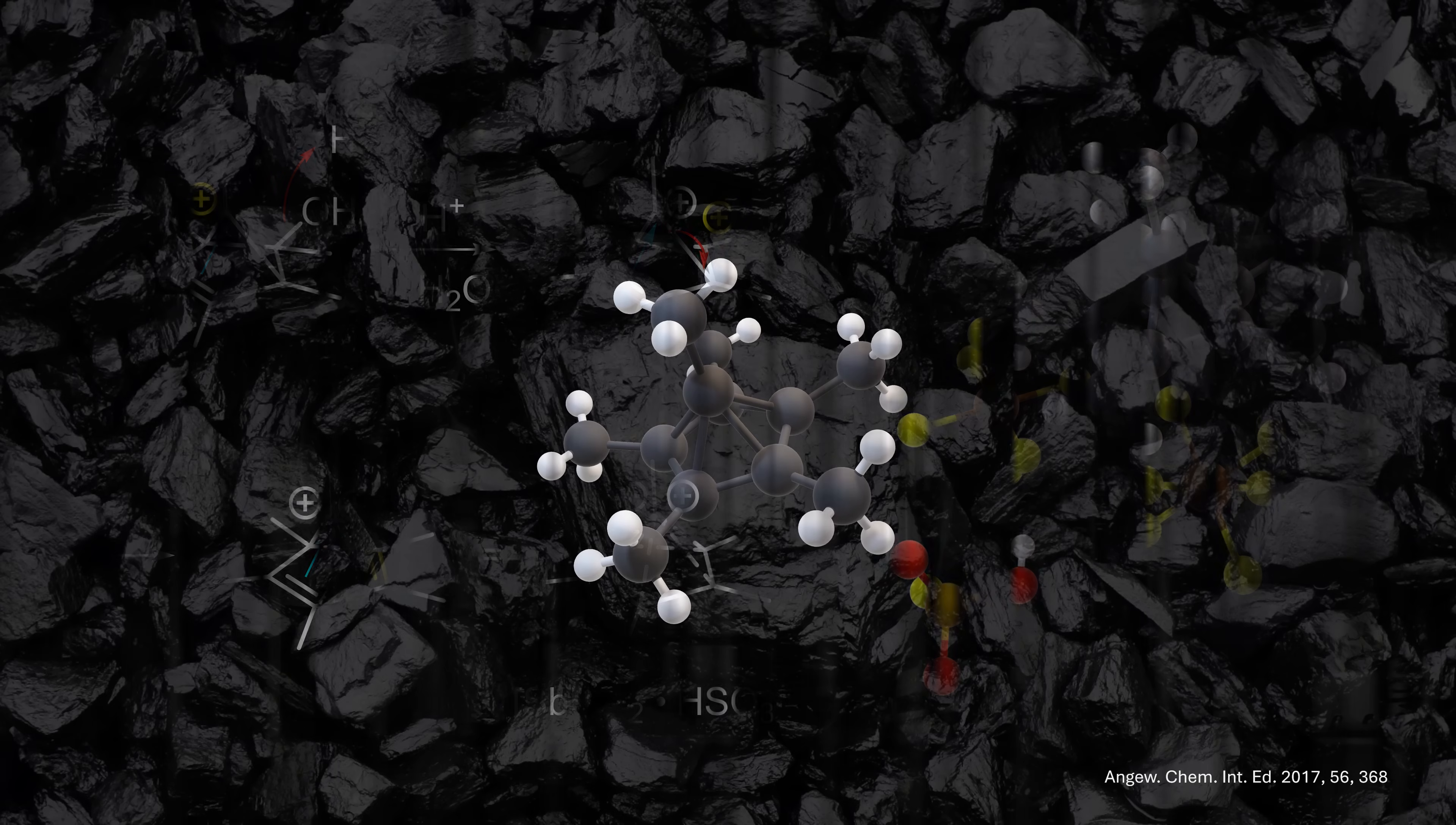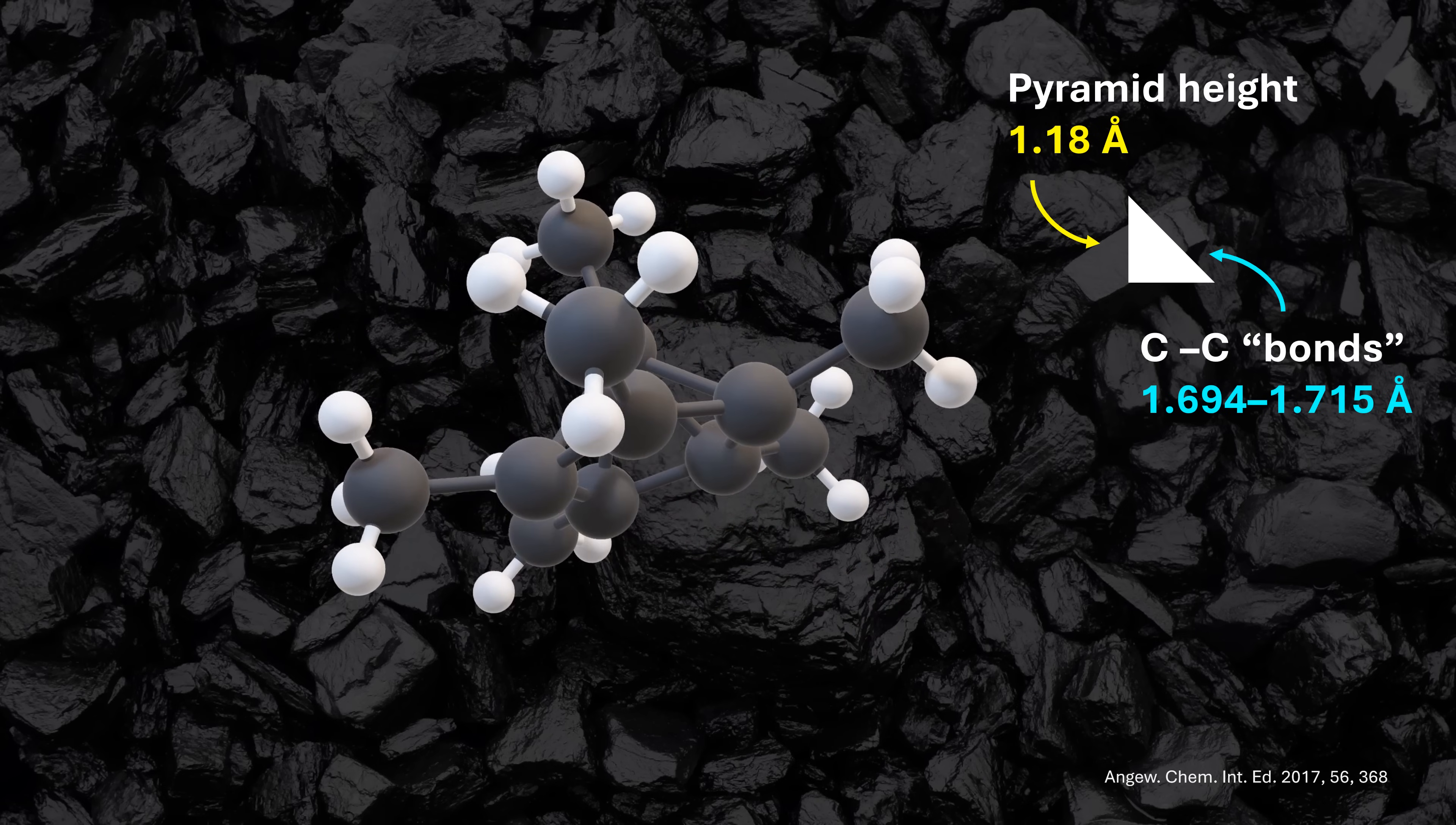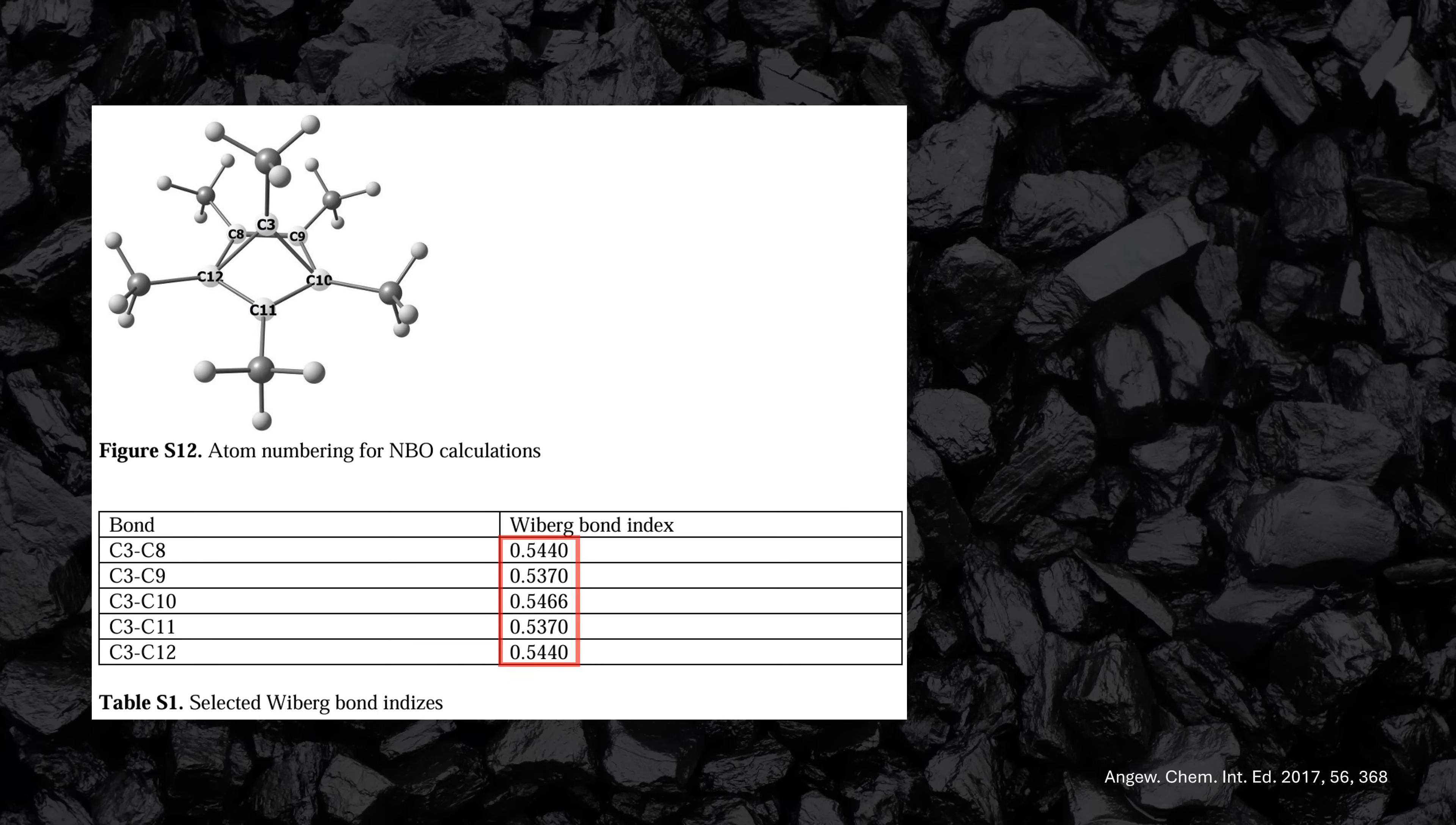The star of the show is the apical carbon. It binds the methyl group on the top and seems to interact with all five carbons of the pyramid base at a distance of roughly 1.7 angstrom. This is quite a bit longer than normal CC single bonds, so you should not be surprised that these are not fully-fledged classical 2-electron bonds. Based on orbital computations, the multicenter-pi-electron interactions can be seen as having bond orders of roughly one-half each.